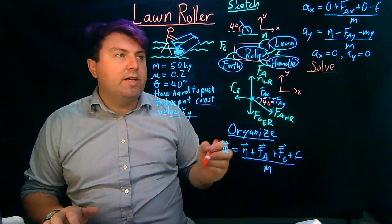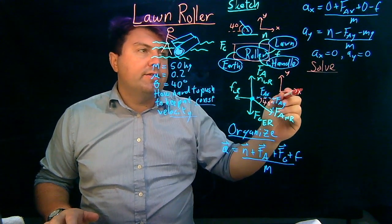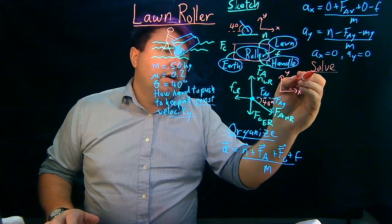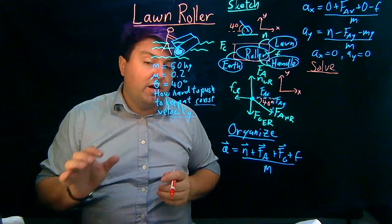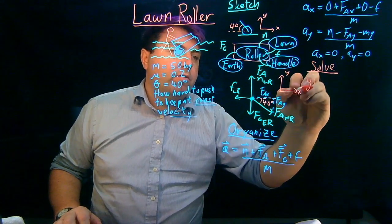So with our solve step, we're trying to find f_a_x, but we also don't know the normal force. And what's important about this problem is that it's a problem in which the normal force is not equal to mg. We'll see that when we solve in the y direction.